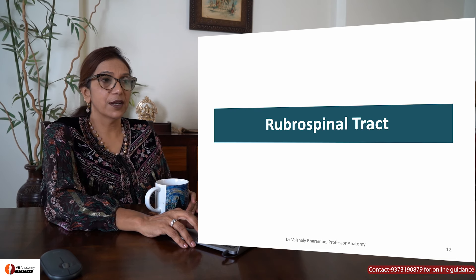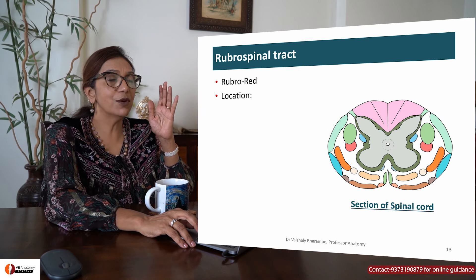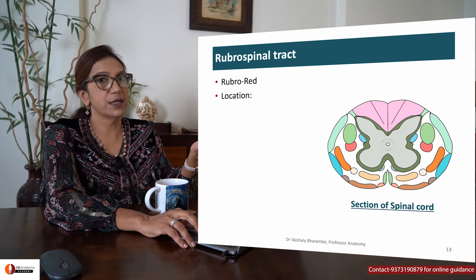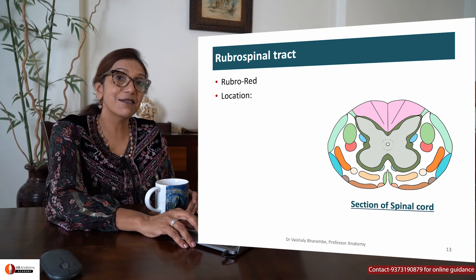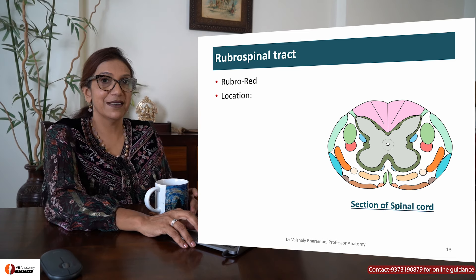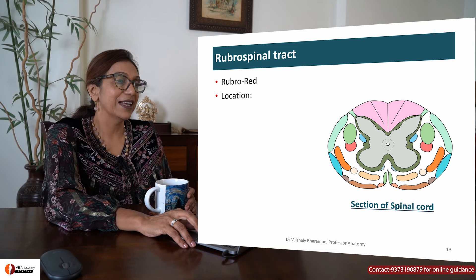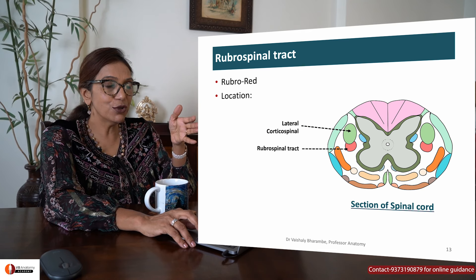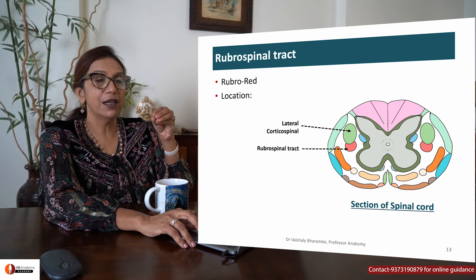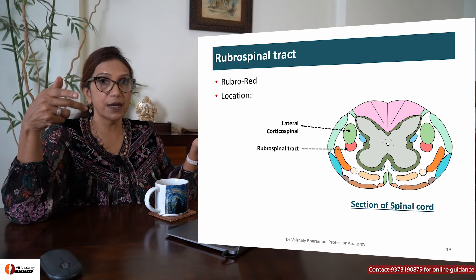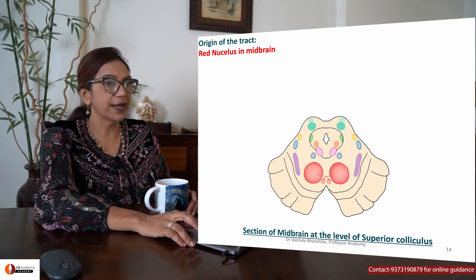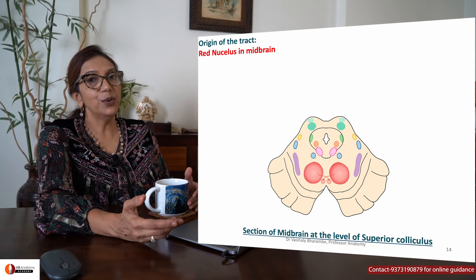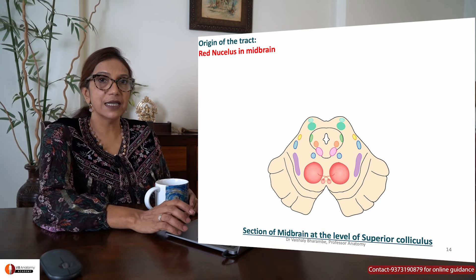Rubrospinal tract. Rubro means red. So it's coming from somewhere called red — that means we must bring ourselves to the red nucleus of the midbrain. Here in the spinal cord, in front of the lateral corticospinal tract on both sides is your rubrospinal tract. It begins from the red nucleus in the midbrain, at the level of the superior colliculus.